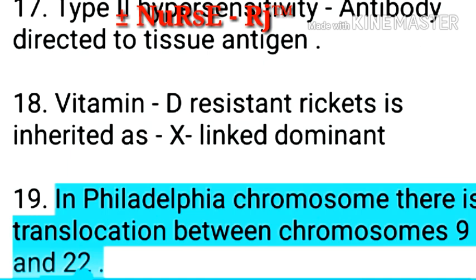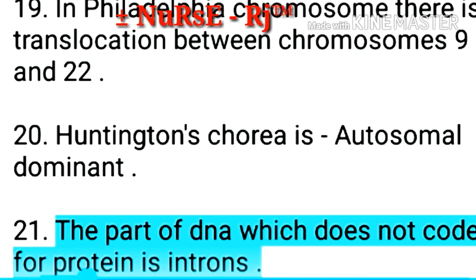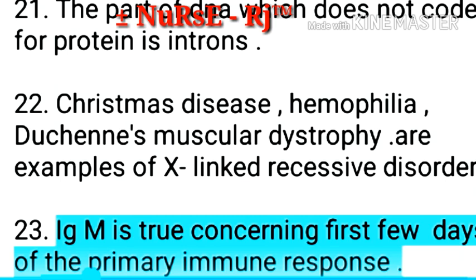Point 19: In Philadelphia chromosome there is translocation between chromosomes 9 and 22. Point 20: Huntington's chorea is autosomal dominant. Point 21: The part of DNA which does not code for protein is introns. Point 22: Christmas disease, hemophilia, and Duchenne muscular dystrophy are examples of X-linked recessive disorders.